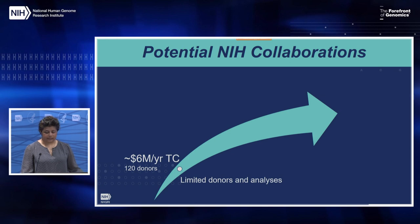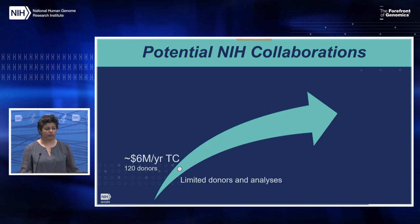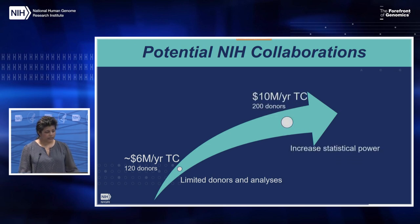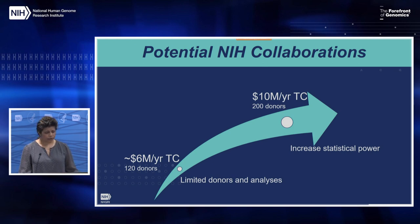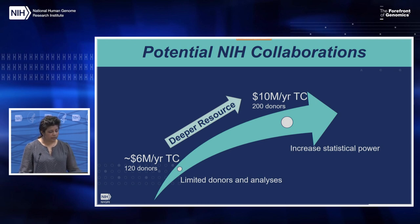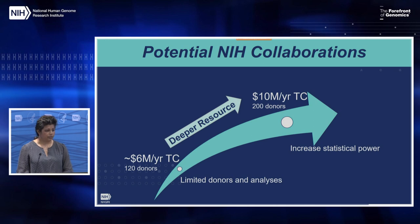We'd like to emphasize this is not a standalone project, and as a pilot project it has the potential to do more as additional ICs sign on. For $10 million per year total cost, we can recruit 200 donors, increasing our statistical power and thereby creating a valuable, deeper, and comprehensive resource of gene expression protocols. There are economies of scale here — while sampling costs are fixed, we expect other costs such as sequencing to decrease, allowing us to add more donors as a result.